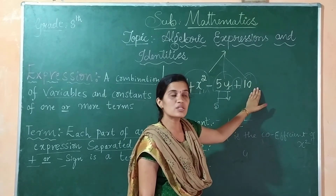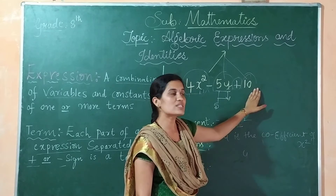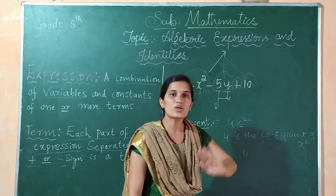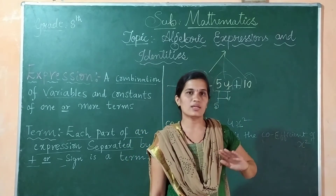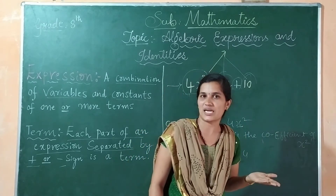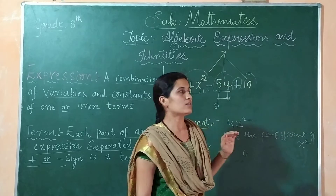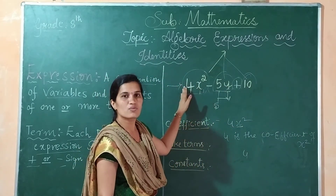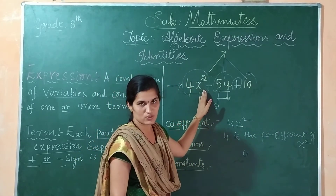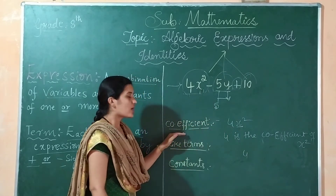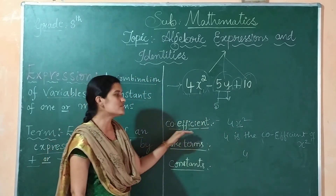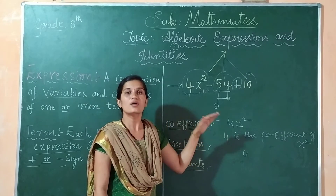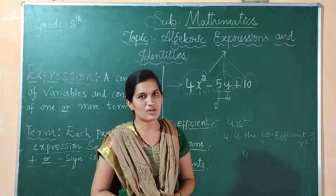Coefficient means who is co-existing with the variable — who is by the side of it. Here in 4x², 4 is the coefficient of x². Now we have learned about what is coefficient and how we can find the coefficient in a given term.